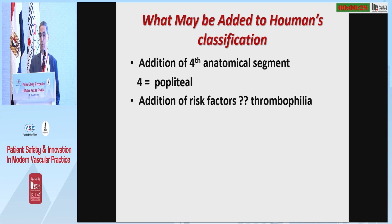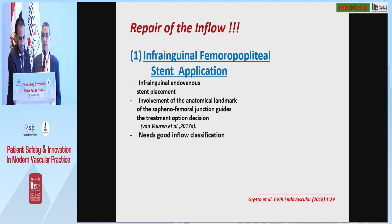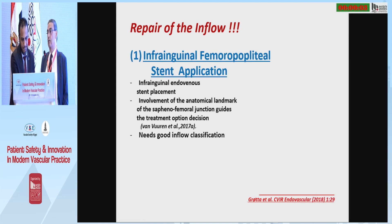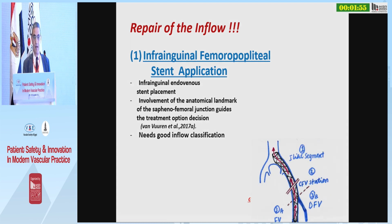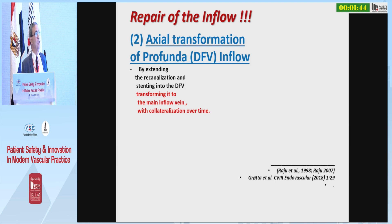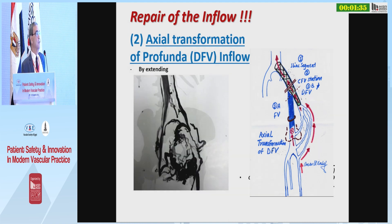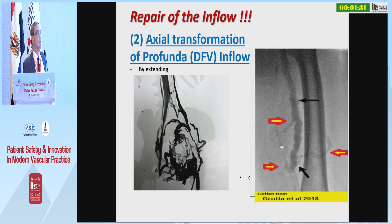What may be added to the Raju classification? Possibly the addition of a fourth anatomical segment and the addition of risk factors such as thrombophilia. For type 5, inflow must be repaired. There are three options for inflow repair. Option one is infrainguinal femoropopliteal stenting — extending recanalization stenting into the femoral vein. Option two is axial transformation of profunda inflow, making the profunda the main inflow, transforming transpelvic collateralization into a side collateralization.